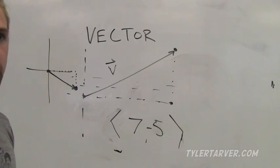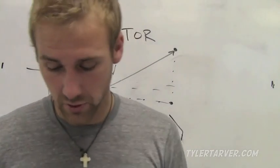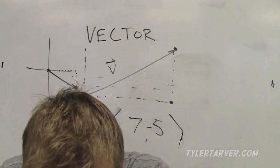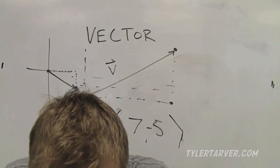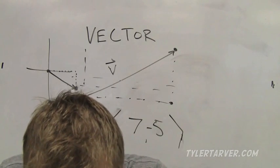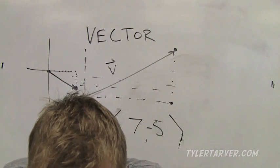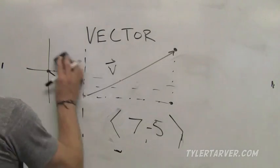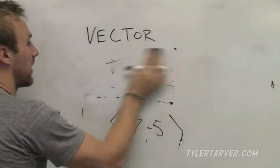Fair enough. Next thing, the direction of a vector. We all know what direction is, where you're going. The direction of a vector is the angle that it makes with a horizontal line.